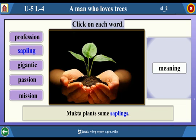Sapling — Mukta plants some saplings. Meaning? A tender tree.